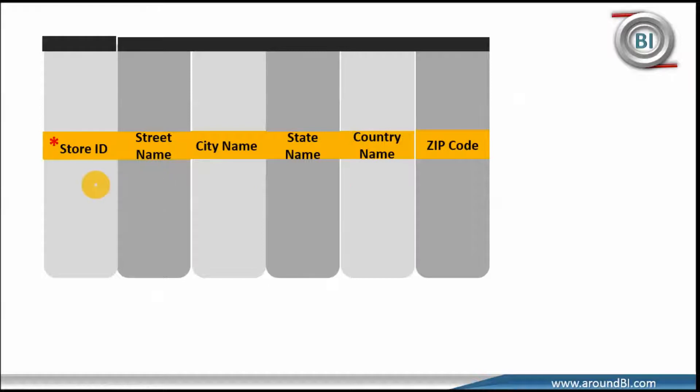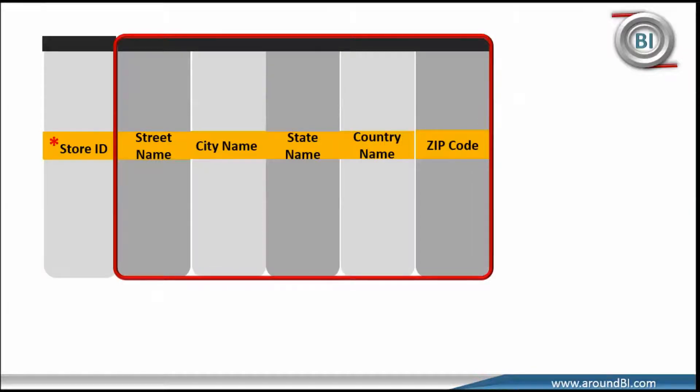We are going in right direction. Now if we talk about structure of dimension table, each dimension table will have two parts. First, that is set of attributes and second, a primary key column.